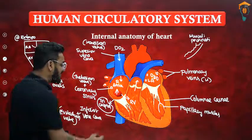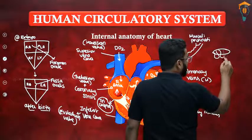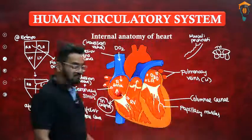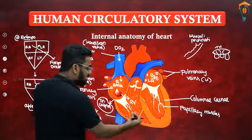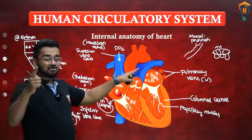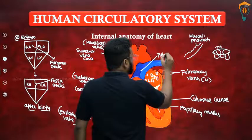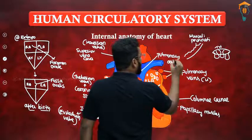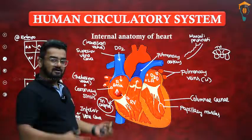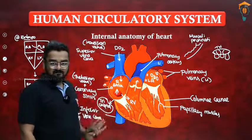The valve between the right atrium and right ventricle is called the tricuspid valve, which has three flap-like structures called cusps. Whenever the right ventricle contracts, the tricuspid valve shuts closed. The deoxygenated blood goes to the lungs for oxygenation through the pulmonary trunk, also called the pulmonary artery. The pulmonary trunk divides into the right pulmonary artery and the left pulmonary artery, taking blood to the respective lungs.